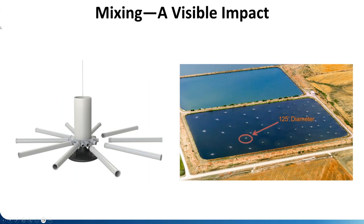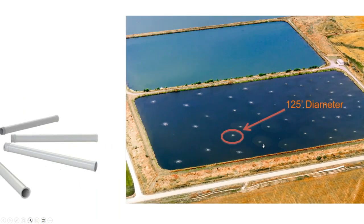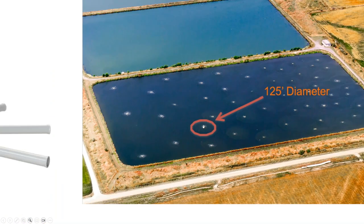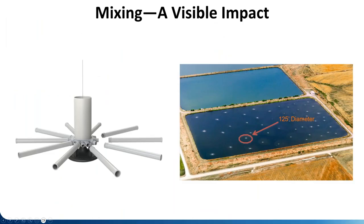It doesn't take a lot to mix. An aerator about seven feet across at the bottom of a six-foot deep basin can mix around a 125-foot diameter — at least in this application. You can see the different color where solids are being suspended. Big mixing can come in small packages.